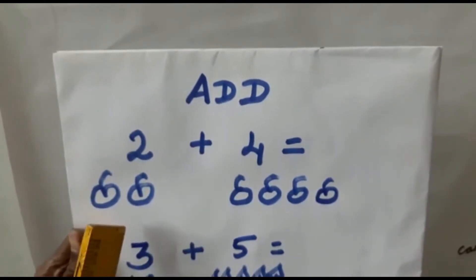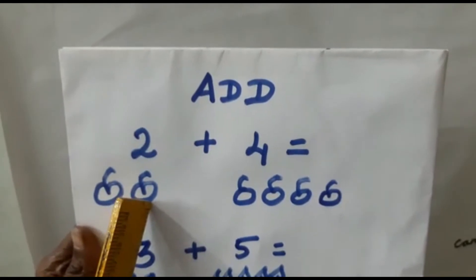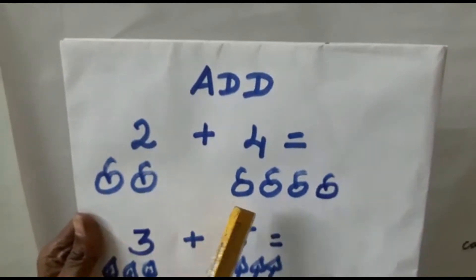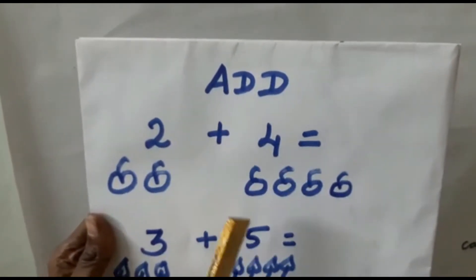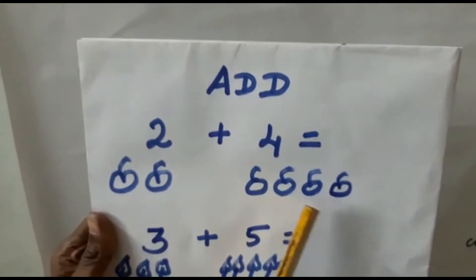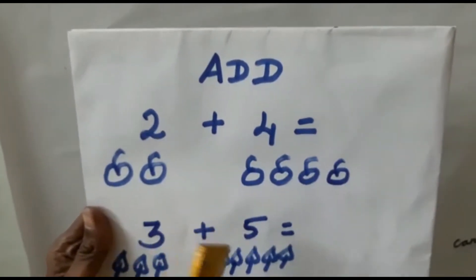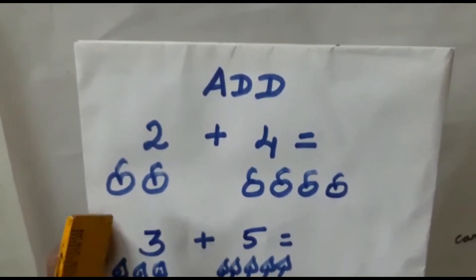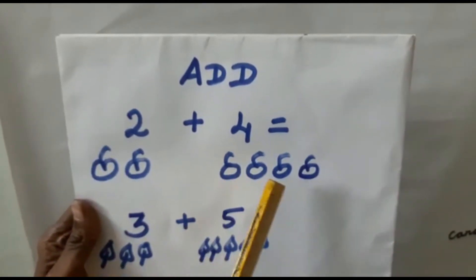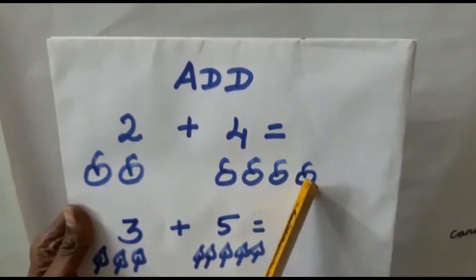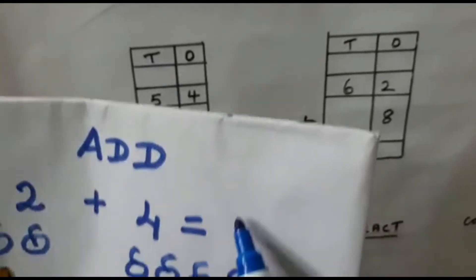Here, how many apples you can see? 1, 2. Then plus, how many apples here? 1, 2, 3, 4. All together, let us count now: 1, 2, 3, 4, 5, 6. All together how many apples? 6 apples.